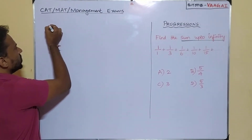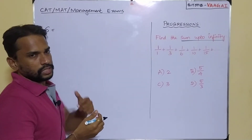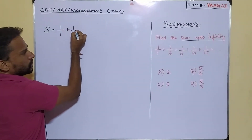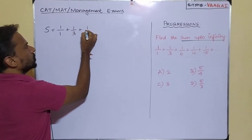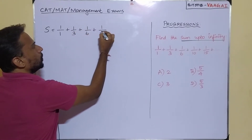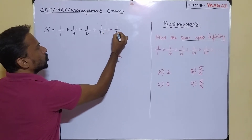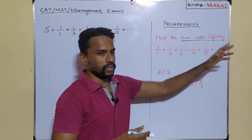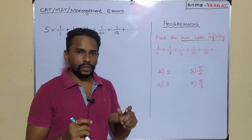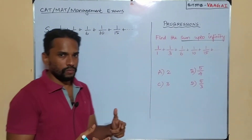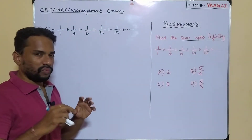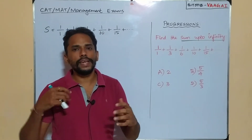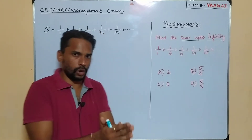Let me name the series as S. So S equals 1/1 + 1/3 + 1/6 + 1/10 + 1/15 and so on — these are the first five terms. Whenever we deal with such a series question, we should be clear about finding the pattern the series is following.